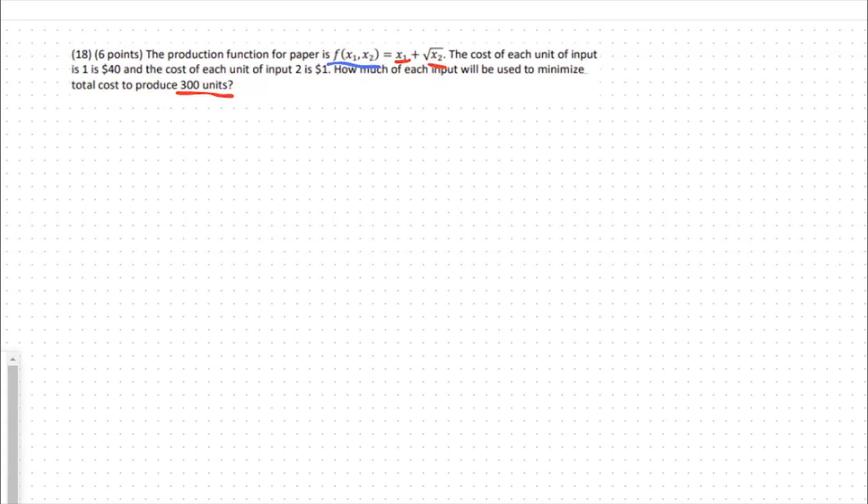So let's start out with this function. We have a quasi-linear production function, in this case x1 plus root x2, and we have our costs for each input. Input 1 being $40 per unit and input 2 being $1 per unit. We're trying to minimize the cost of using these two inputs to produce 300 units.